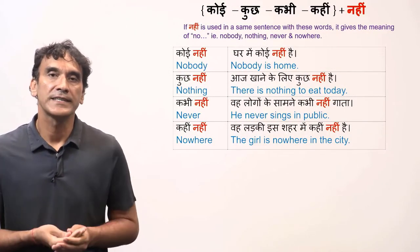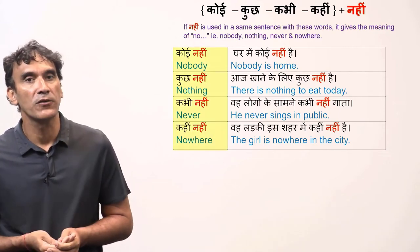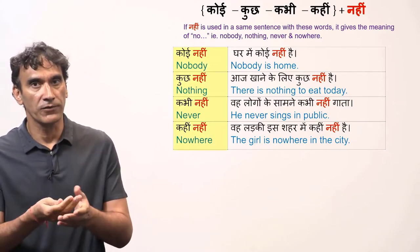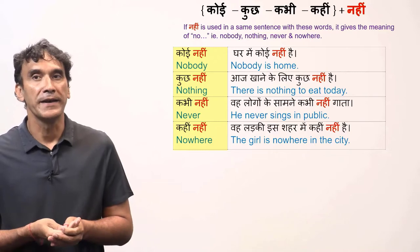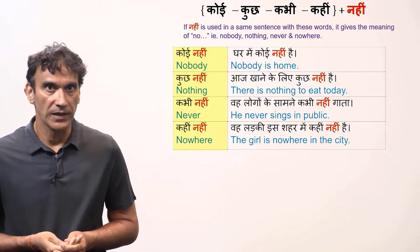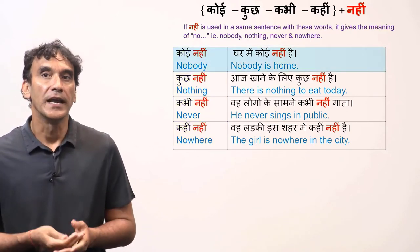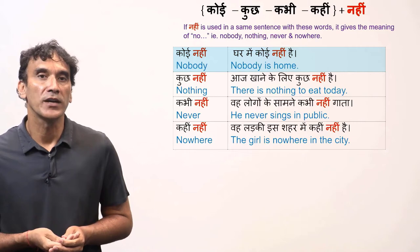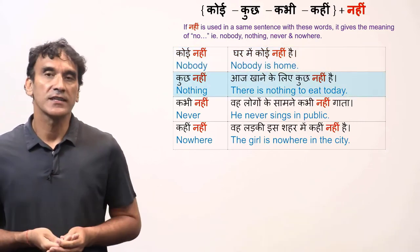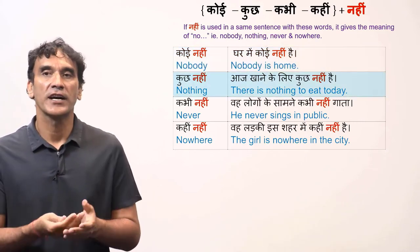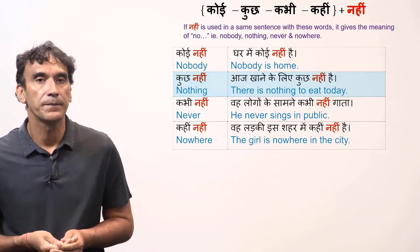If nahi is used in the same sentence with these words, it gives the meaning of no — for example, nobody, nothing, never, and nowhere. Koi nahi means nobody. Ghar mein koi nahi hai — Nobody is home. Kuch nahi means nothing. Aaj khane ke liye kuch nahi hai — There is nothing to eat today.